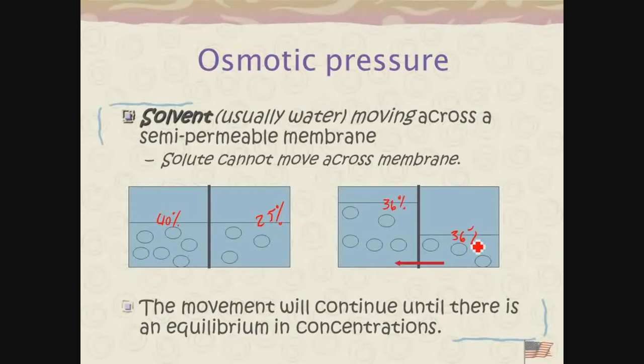Diffusion is equilibration because the particle itself can move across a semipermeable membrane. Sometimes the membrane is impermeable to solutes but permeable to water. Say the concentration here was 40% and here was 25% — water will move from one side to the other until they're both, say, 36%. The concentrations are equal, but how much water is in each area is not. The one on the right has gone down because water has left and gone to the left-hand side. Concentration deals with how much solute you have in relationship to how much volume — how much solvent — you have.